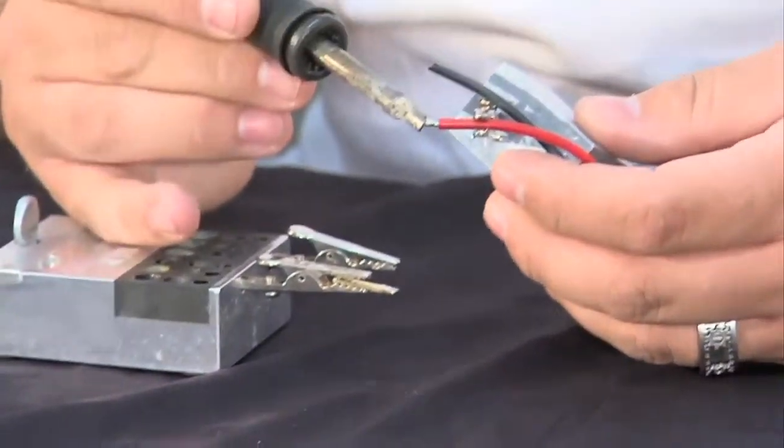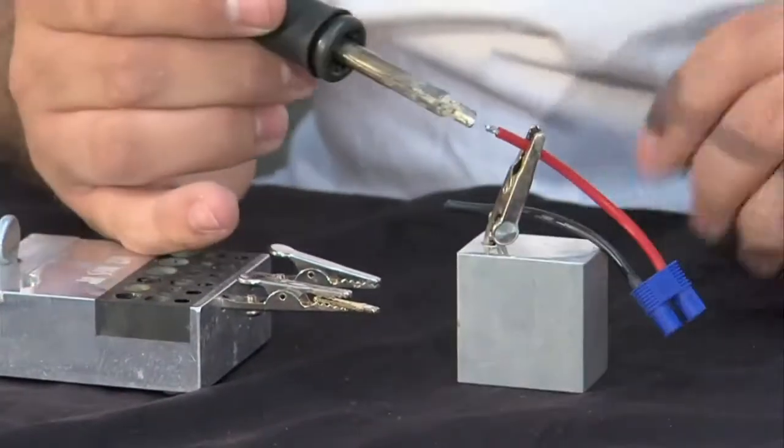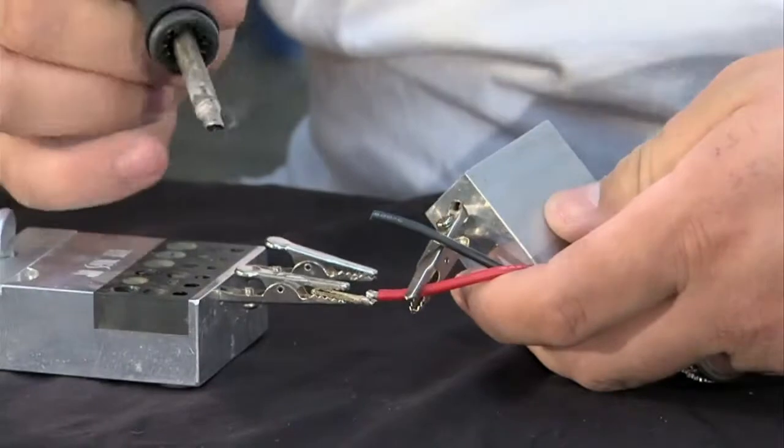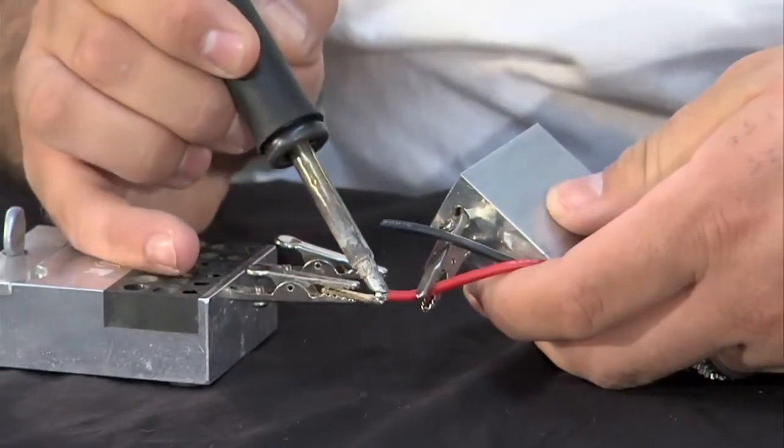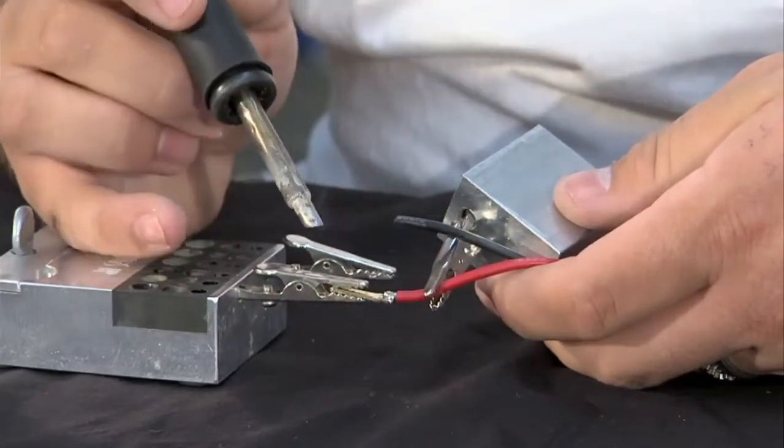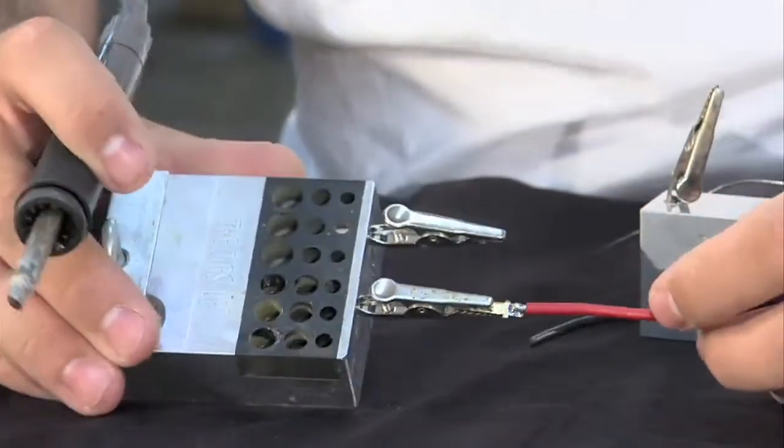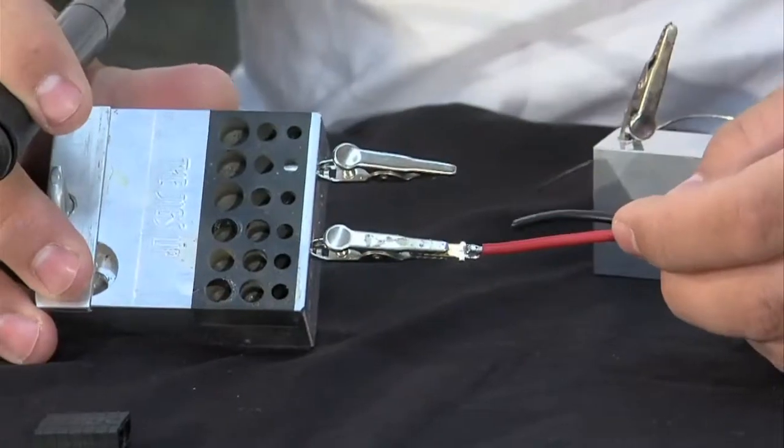What we're going to do is we're going to heat this back up just to get it a little bit of solder on there. With that heat on there, we're going to touch the two together. Give it a second to solder and that's what a perfectly good solder joint would look like.